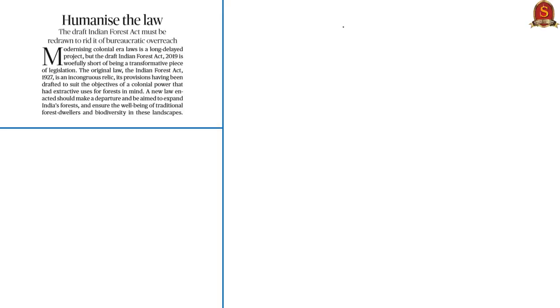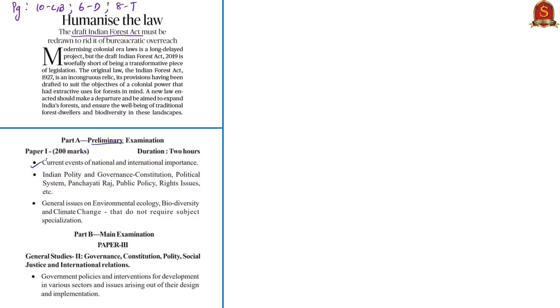Moving on to the next article, which talks about the Draft Indian Forest Amendment Act of 2019. This appears on page 10 in Chennai and Bengaluru edition and page 6 of Delhi edition and page 8 of Thiruvananthapuram edition. The information is important under current events and Indian polity and governance in the prelims syllabus, and in GS Paper 2 under functions and responsibilities of the union and government policies, and GS Paper 3 under conservation and environmental impact assessment.